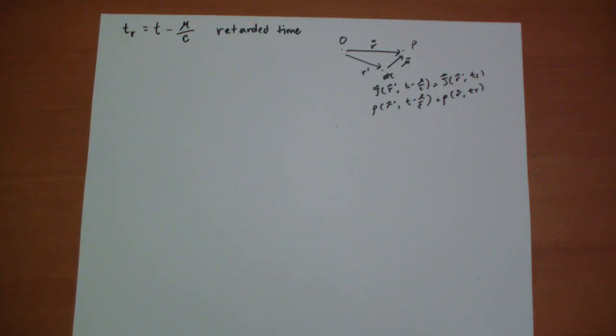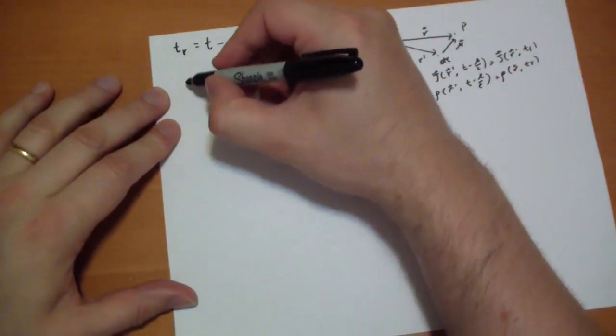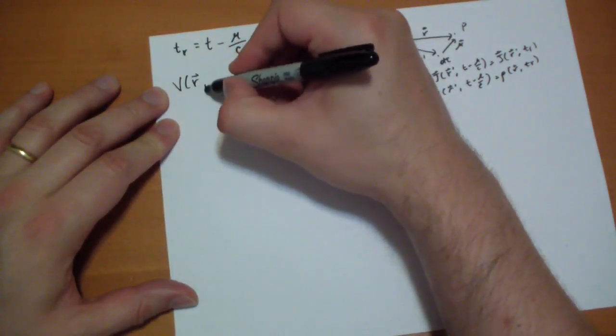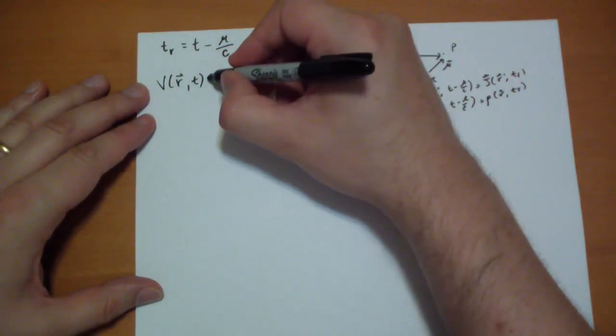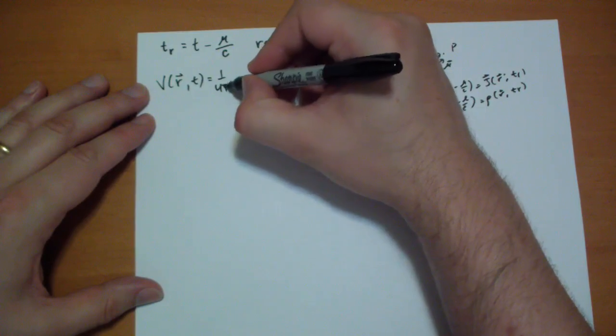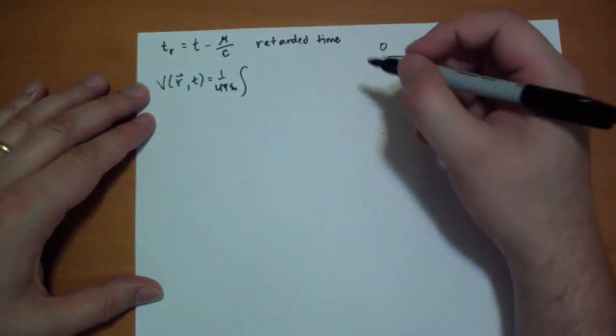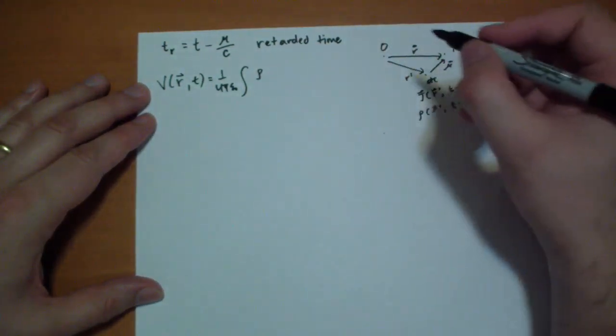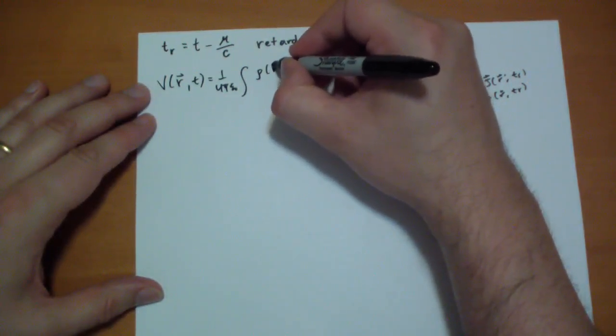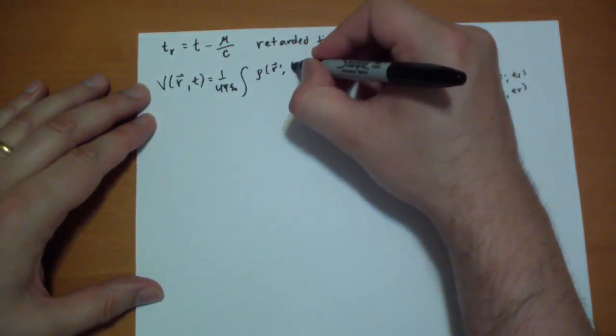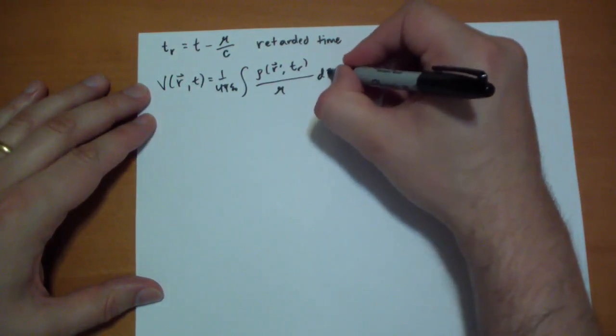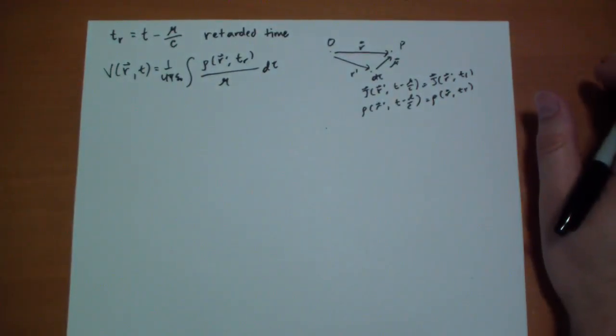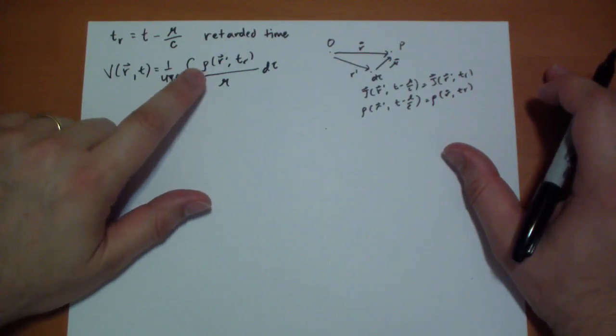Let's plug it into our equations. We have V at r, at time t, is equal to 1 over 4 pi epsilon naught, integral of the charge density at this retarded time, so r vector prime, and then tr, divided by curly r d tau. We're interested in the charge density as it existed a certain time ago, at that point.